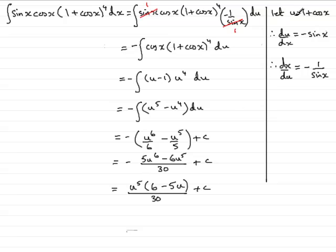Now I'm going to substitute for u, so we have u to the power 5 becomes (1 plus cos x) all to the power 5, and then introduce a square bracket here because I can see brackets within brackets coming up, so we've got 6 minus 5 lots of u, which was 1 plus cos x.